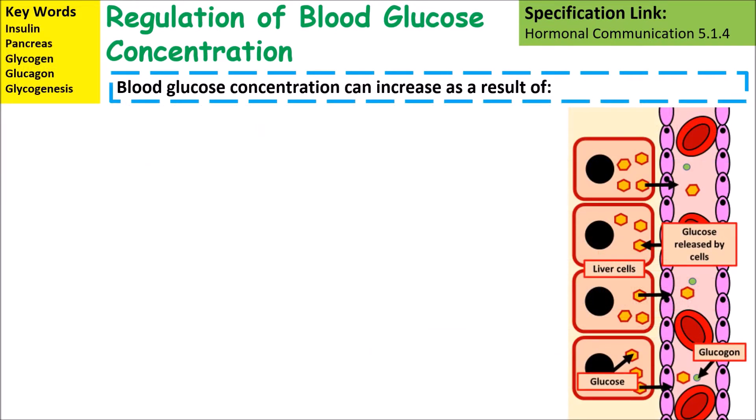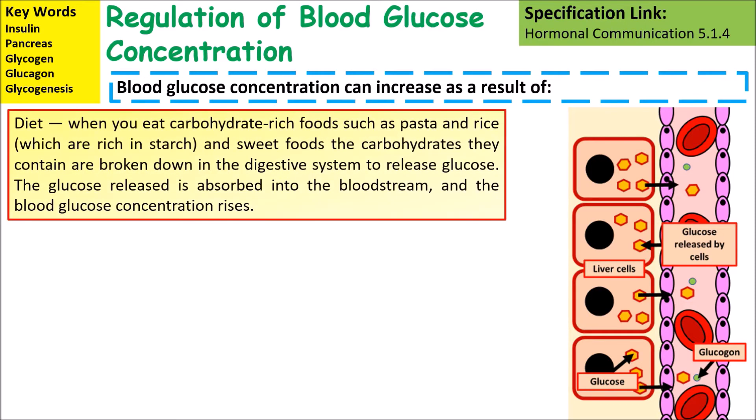Blood glucose concentration can increase as a result of diet. If you are eating rich carbohydrate foods or sweet foods, carbohydrates will be broken down into small sugars which will then be absorbed into the bloodstream.